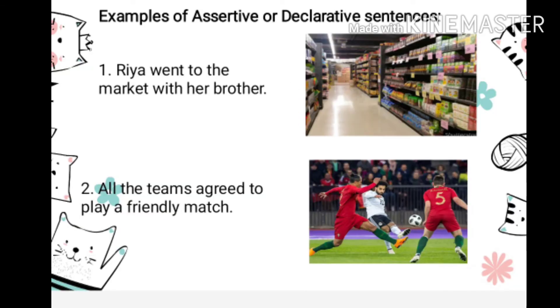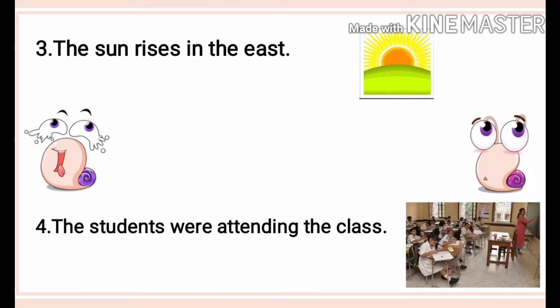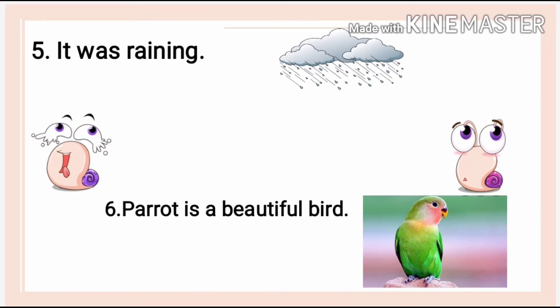The examples are: Riya went to the market with her brother. All the teams agreed to play a friendly match. The sun rises in the east. The students were attending the class. It was raining. Parrot is a beautiful bird. These are the examples for assertive sentences.